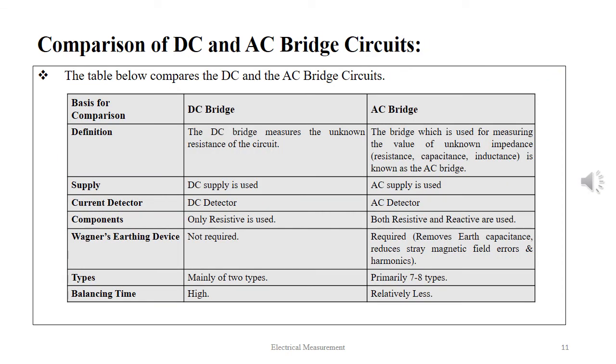Here we hold a comparison between the DC and the AC bridge circuits. By definition, the DC bridge measures the unknown resistance of the circuit, while the AC bridge measures the value of unknown impedance, which can be resistance, capacitance, or inductance.